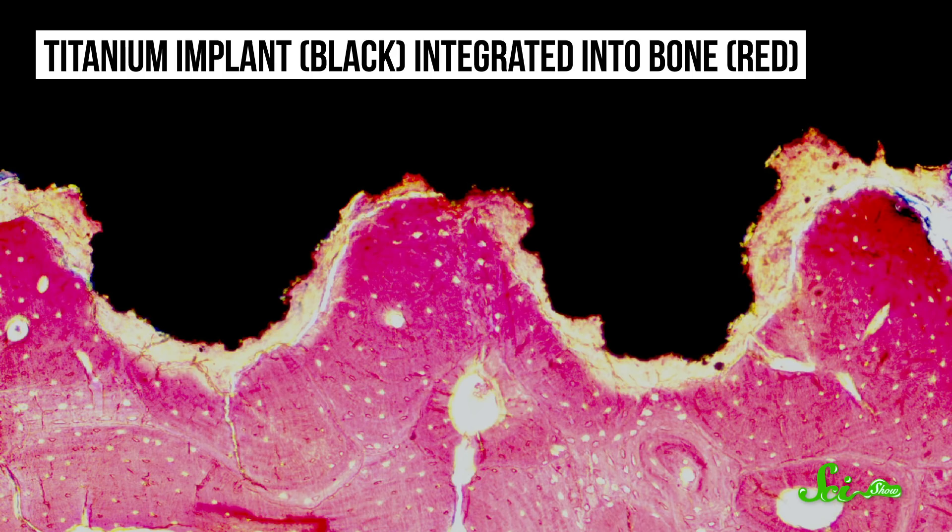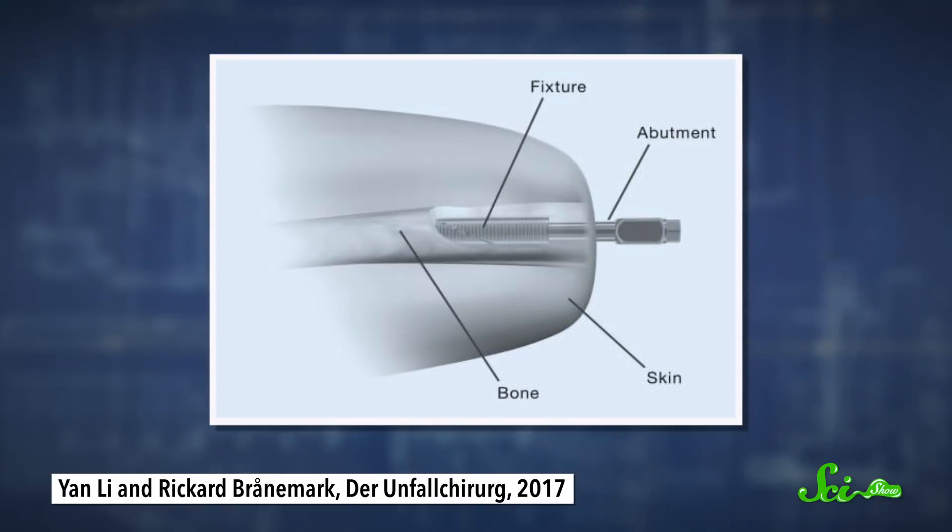And the new bone grows around the titanium fixture. These titanium implants are made with lots of nooks and crannies that bone cells can grow into, so that they stay secure for decades.